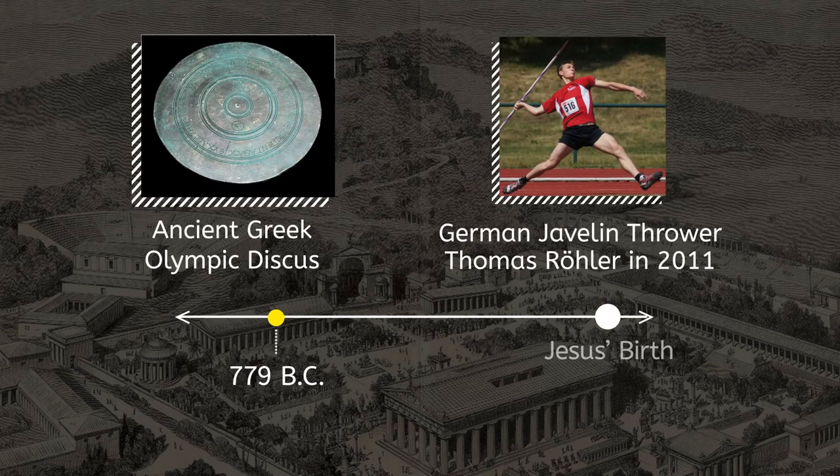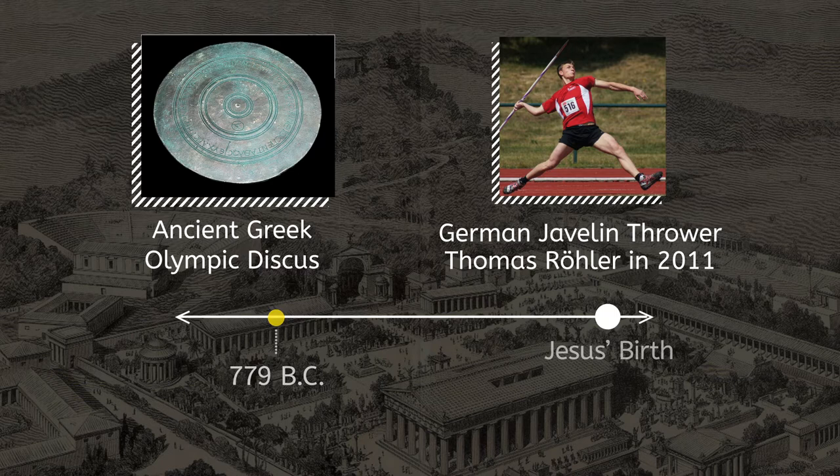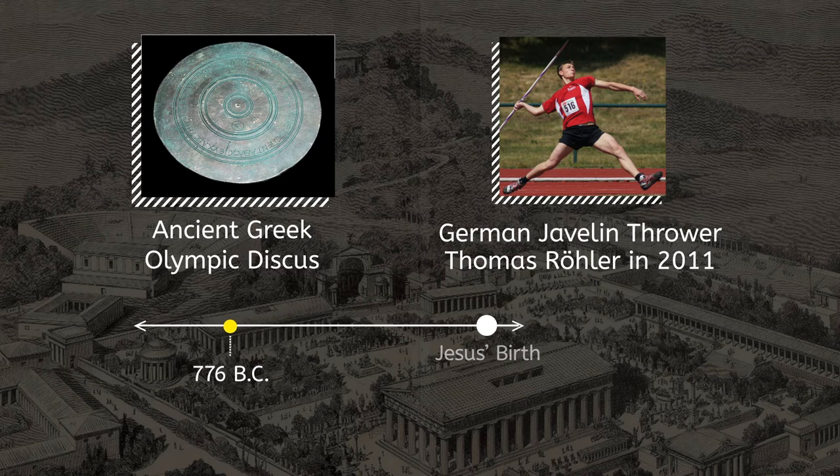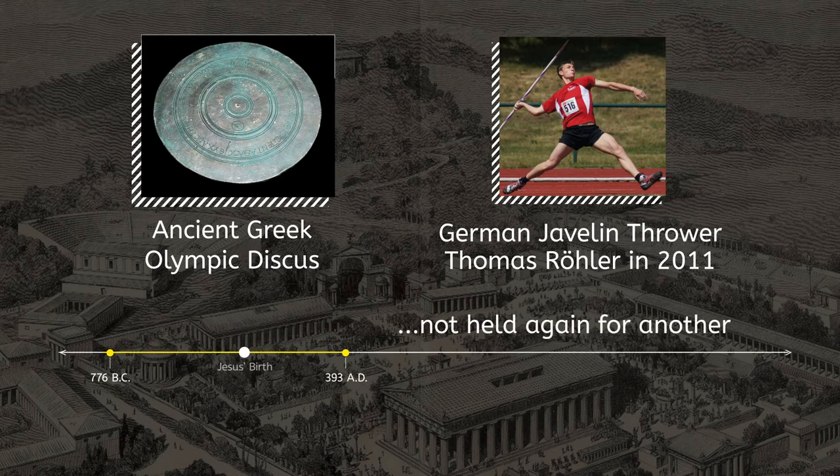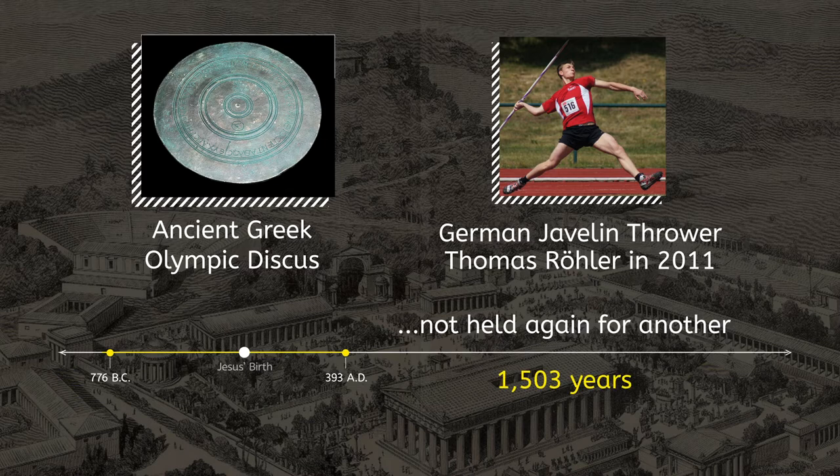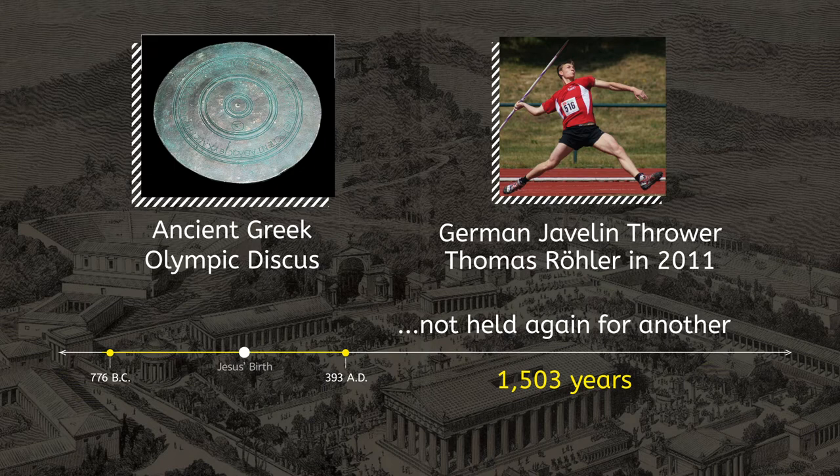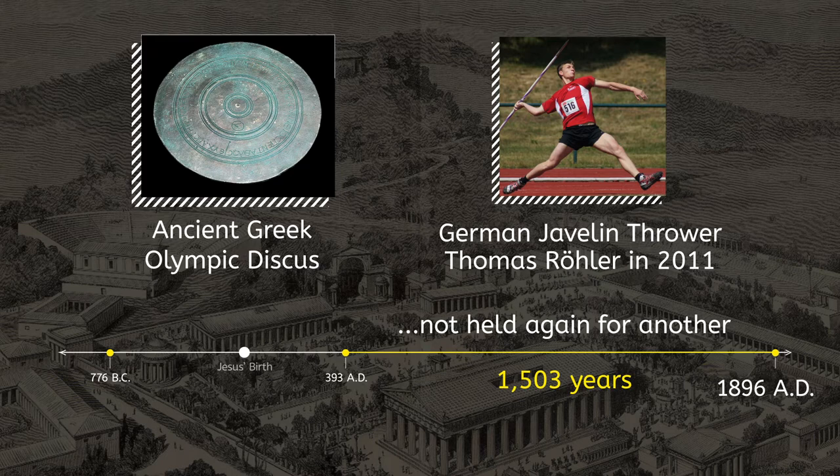As time went on, more and more sporting events were added. These games were held in the city-state of Olympia from 776 BC through 393 AD. After that, the Olympics were not held again for another 1,503 years. The first modern Olympics were held in Athens, Greece in 1896. Luckily today, we can enjoy the Winter and Summer Olympics every four years.